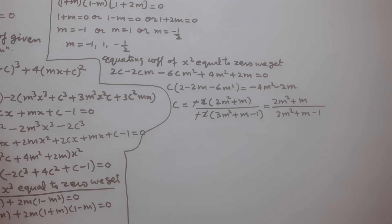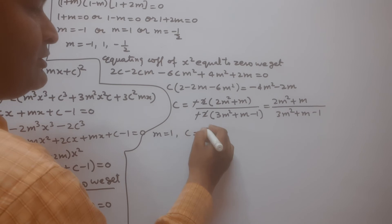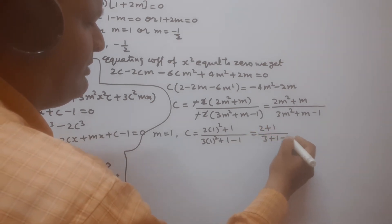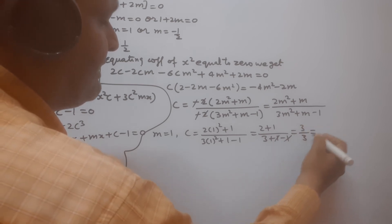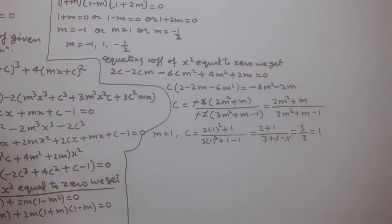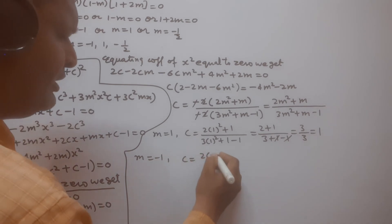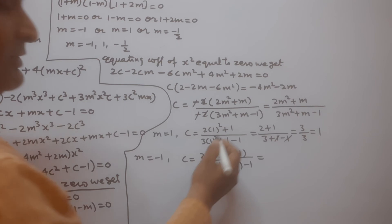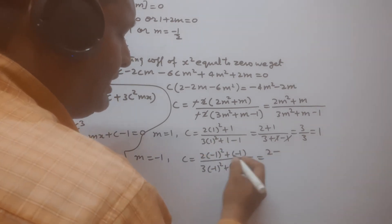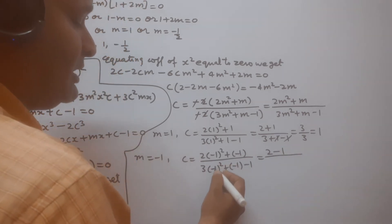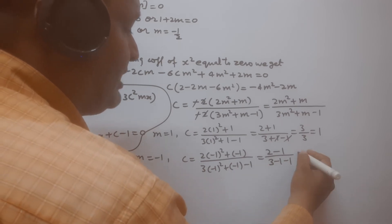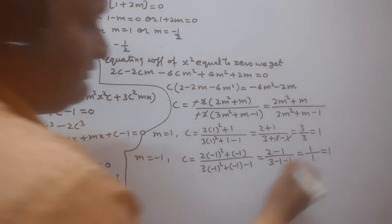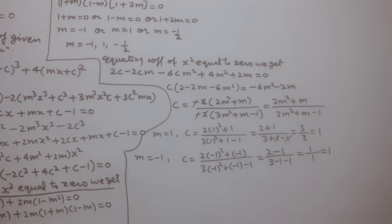For m = 1: c = (2(1)² + 1) / (3(1)² + 1 − 1) = 3/3 = 1. For m = −1: c = (2(1) + (−1)) / (3(1) + (−1) − 1) = (2−1)/(3−2) = 1/1 = 1. So corresponding to m = 1 and m = −1, we get c = 1 in both cases.